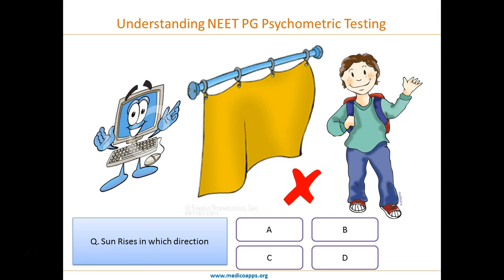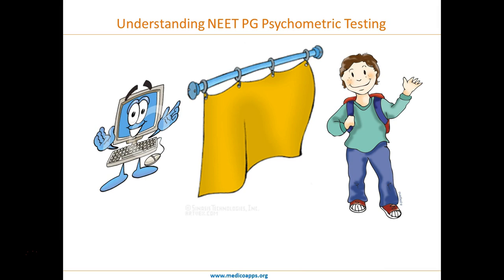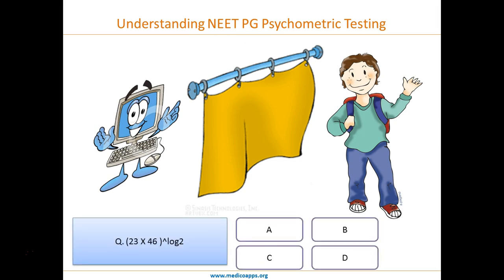And if you get an easy question wrong, the computer is so certain that you belong to a lower grade. Maybe even the first tough question you got right was on guesswork. Let's see another thing. Suppose a question is given where the normal time to solve it is, let's say, 2 minutes.